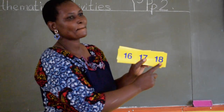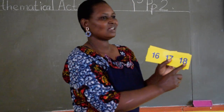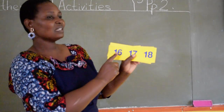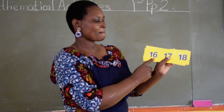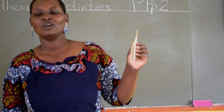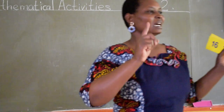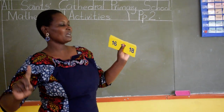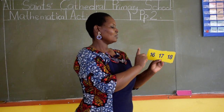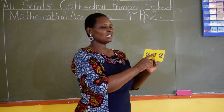Who can tell us this number? Which number is this? Yes, Pepella? This is number 16. Which number comes after number 16? When we are counting we say 16, then the next number is number? Very good. The next number is number 17. Number 17 is the number after number 16.